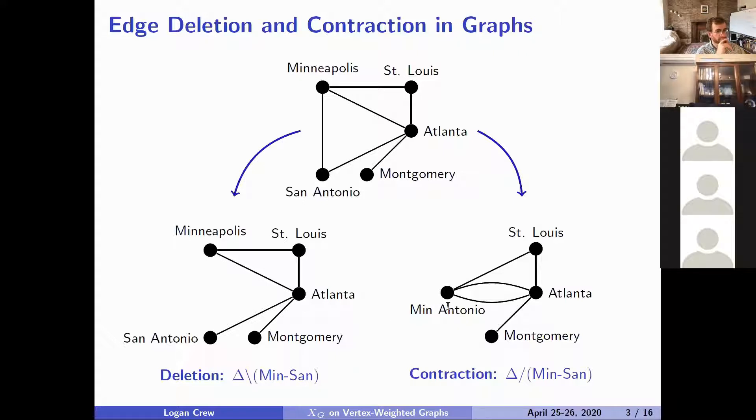Alternatively, we can contract it. For the purposes of this talk, my contraction will not necessarily reduce it to simple graphs, unless I say otherwise. So as in this example, we still have two edges between Atlanta and our unexpected city of Minantonio, since there was one from Atlanta to both endpoints of that edge. That's denoted by a forward slash.